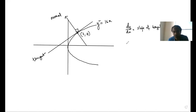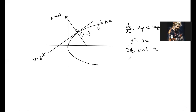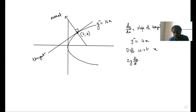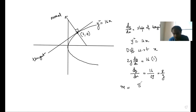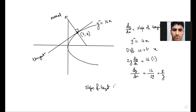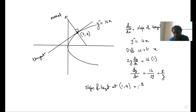dy/dx is nothing but the slope of the tangent. I take this equation and differentiate with respect to x. So 2y times the derivative of y equals 16 times the derivative of x. From this I get dy/dx equals 16 upon 2y, that is 8 upon y. Then the slope of the tangent at point (1,4) is 8 divided by the y-coordinate, which is 8 divided by 4, so slope of the tangent is 2.